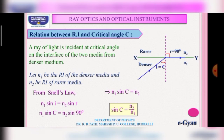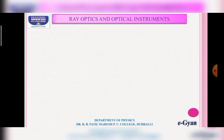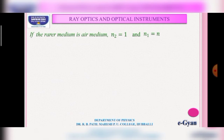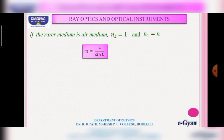If the rarer medium is air, then n2 = 1 and n1 = n. Substituting these values, we get sin C = 1/n, or n = 1/sin C. This is the relation between refractive index and critical angle when the rarer medium is air.